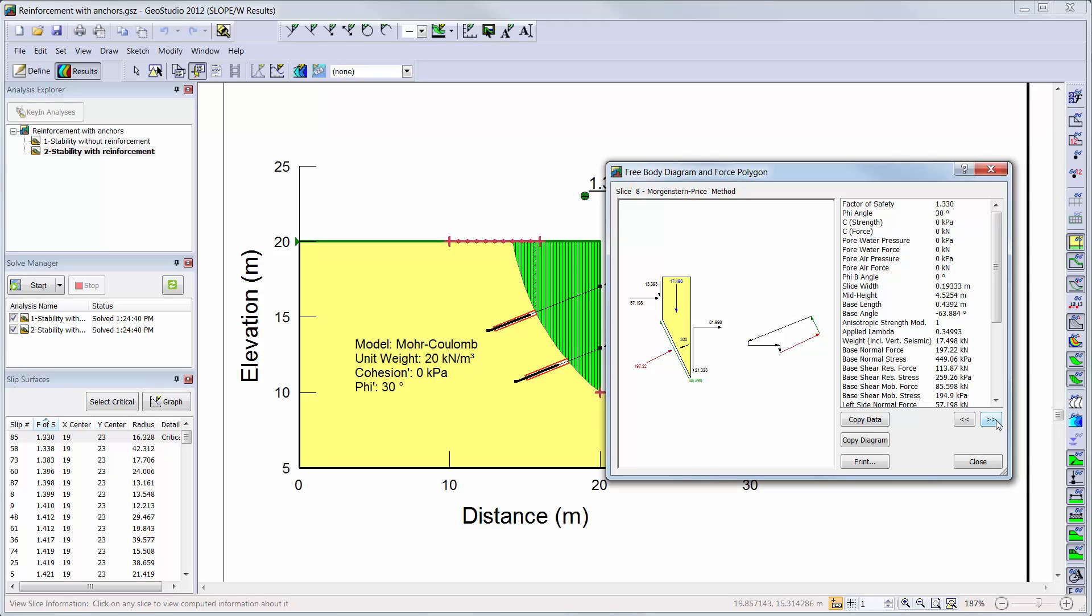More information on the distribution of force can be found in the Slope W engineering book or the example file for the reinforcement with anchors. It is recommended that this tool is used whenever reinforcement is used in a slope stability analysis to ensure that the results match the user's understanding and expectations of the analysis.